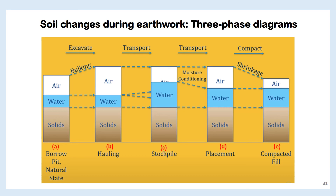If the solids and water don't change, the only way the total volume increases is if the volume of air increases — we call this phenomenon bulking. After the dump truck at the borrow area is full, it transports soil to the stockpile area where it is dumped. The total volume of solids doesn't change significantly from transport to being stockpiled. However, the water content may change: if it is hot and dry, water may evaporate; if there is precipitation, the water content may increase. It depends on the weather and how long the soil is stockpiled.